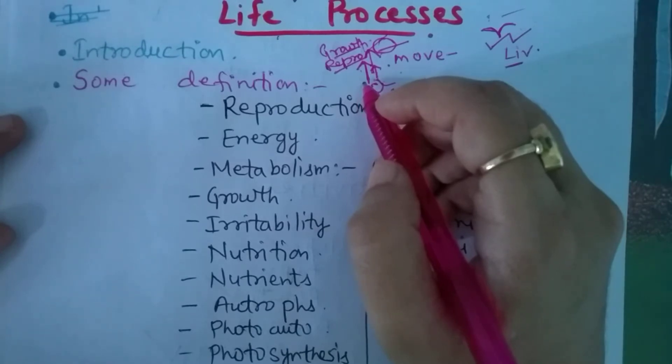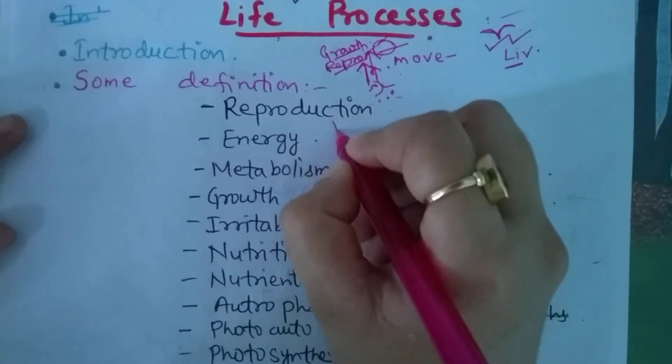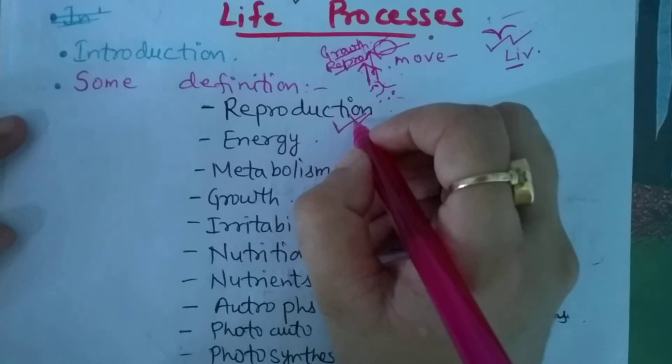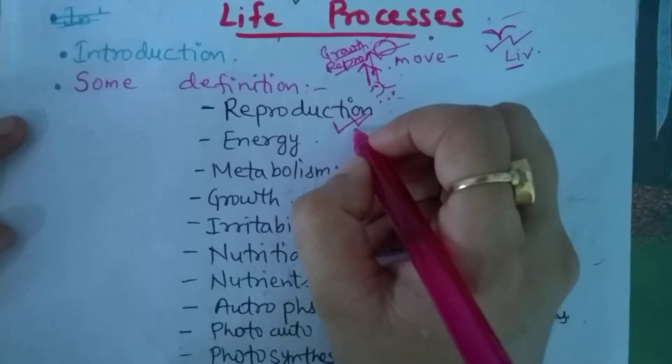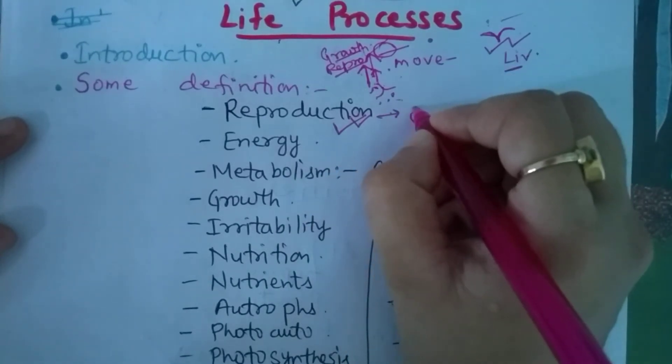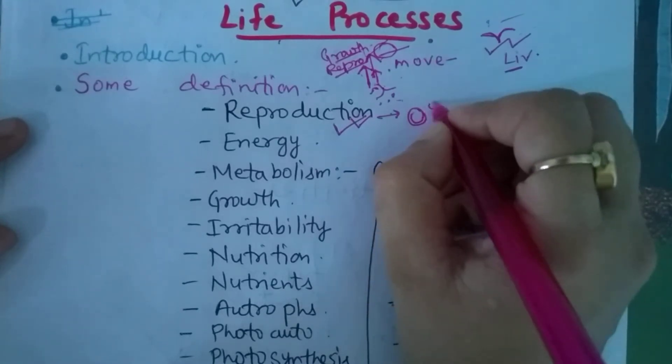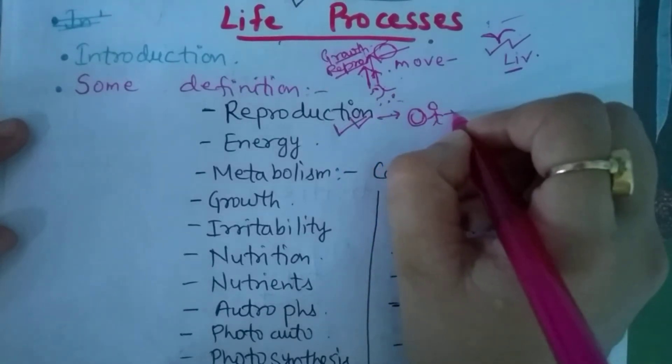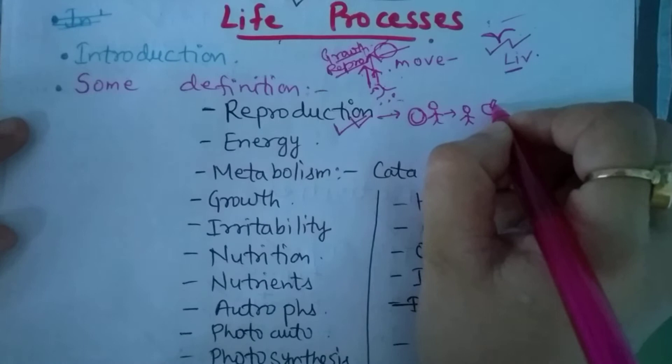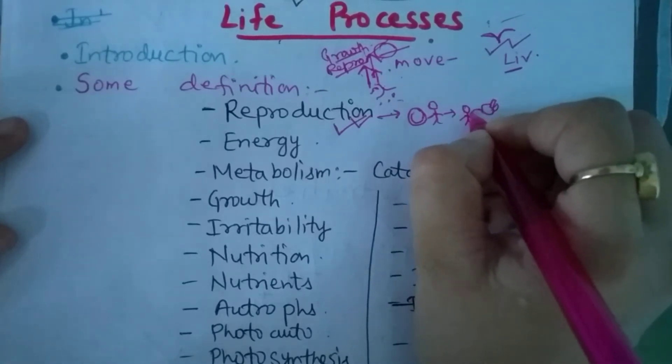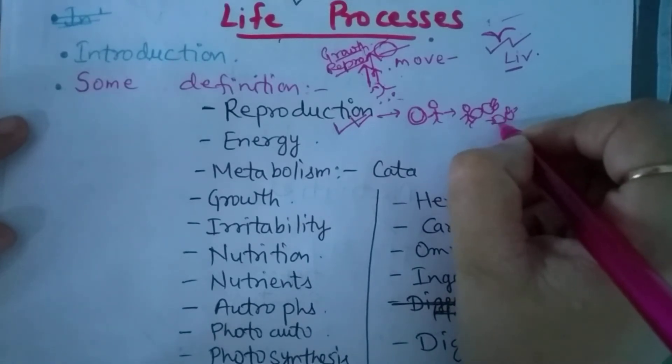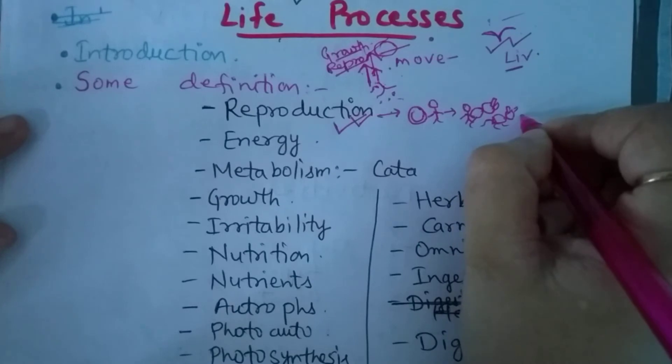Now we'll see that life processes occur in living beings, and we study them. First, we'll look at some definitions. Our first definition is reproduction. It is essential that a living being should reproduce, and when any living being performs reproduction, they will produce the same being as they are.